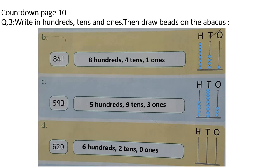This is part D: 620. First you will write 600, 2 tens, and 0 ones. How many beads in hundreds? 6. How many beads in tens? 2 tens. And 0 means nothing, so you will not draw any bead in the ones column. Parts E, F, and G are your homework.